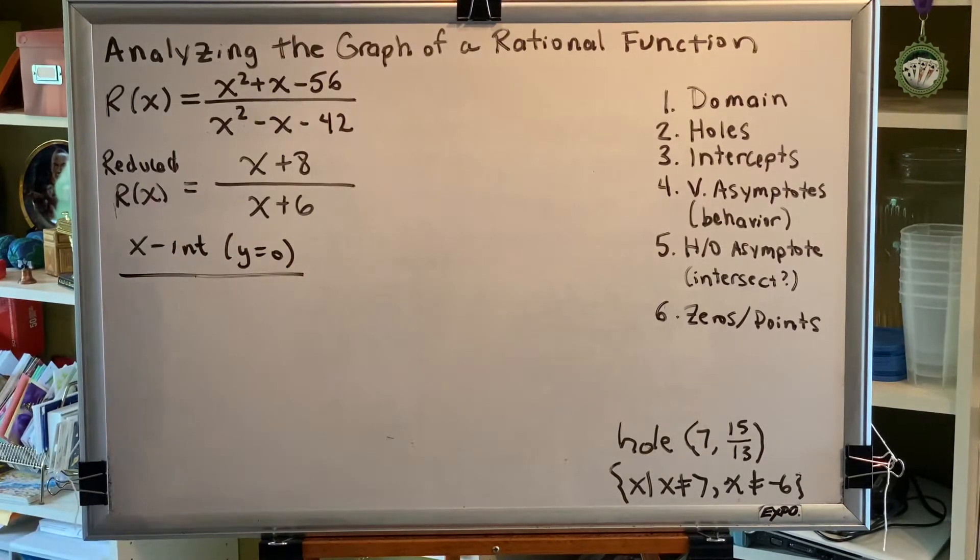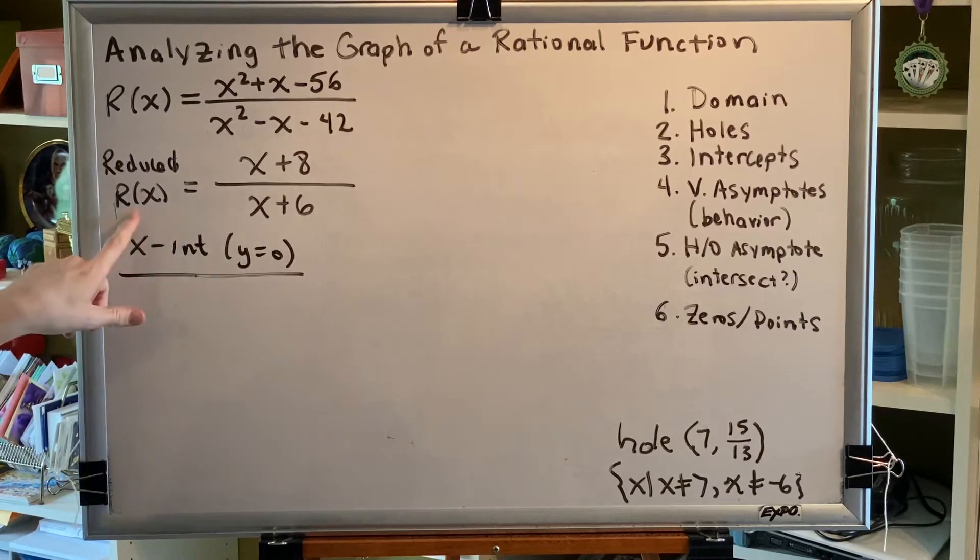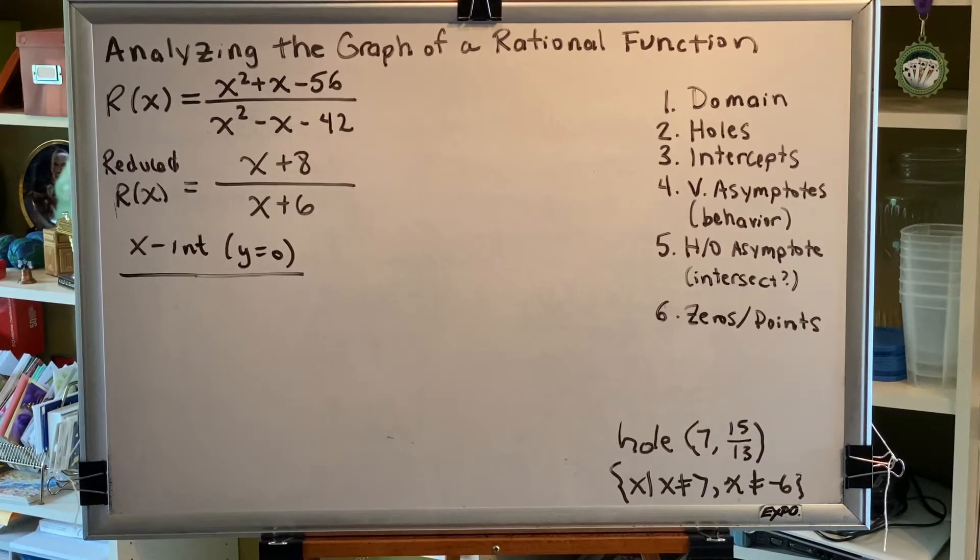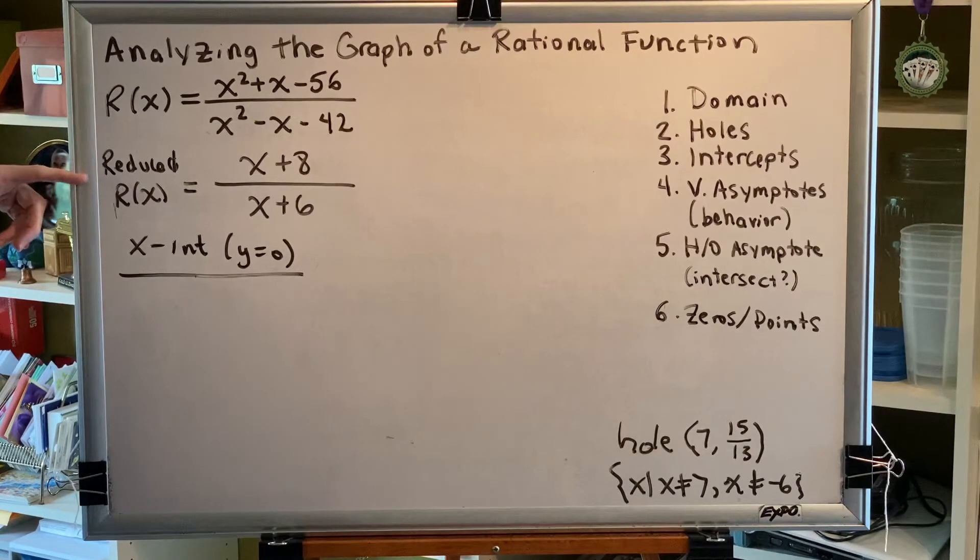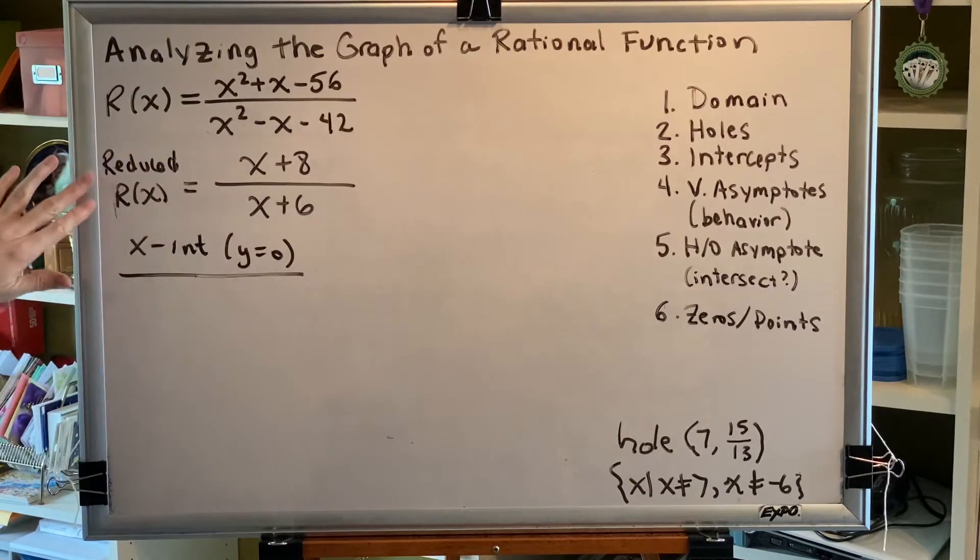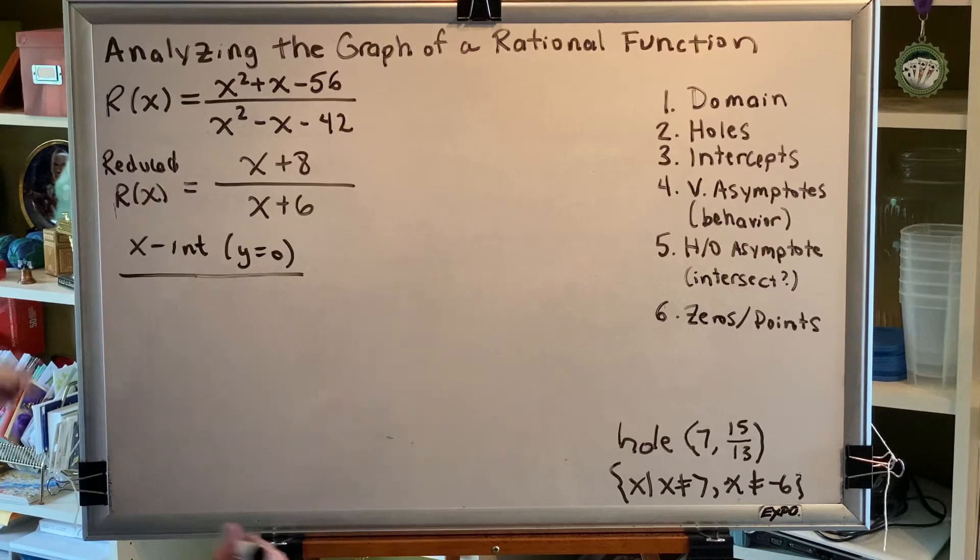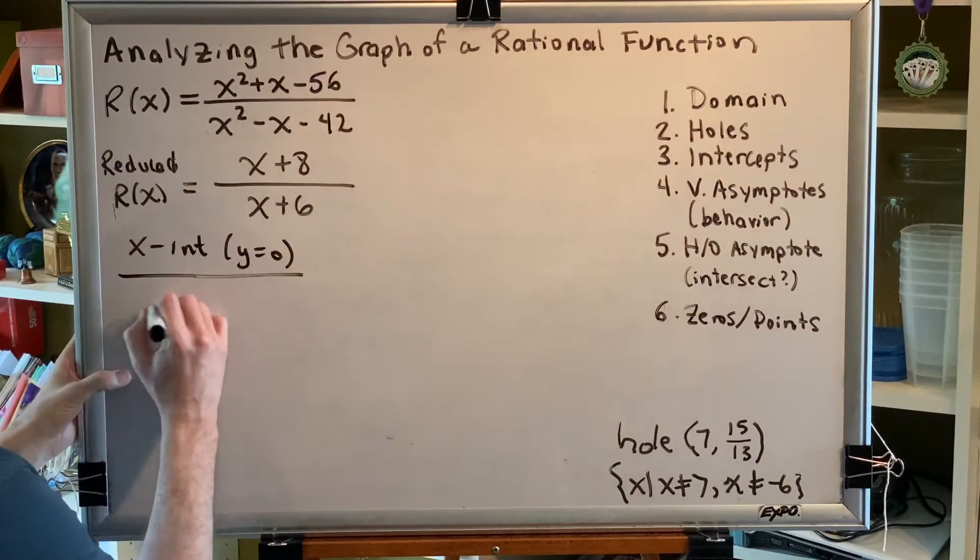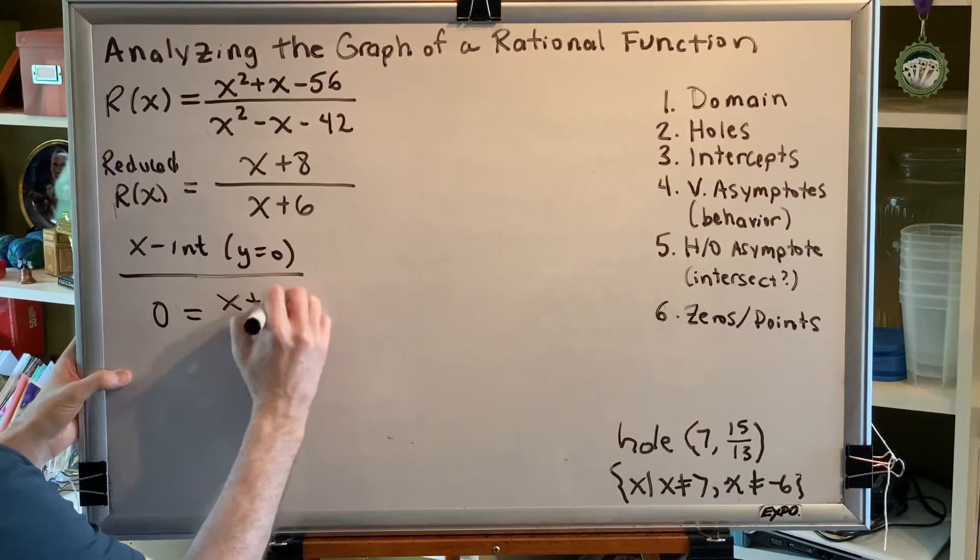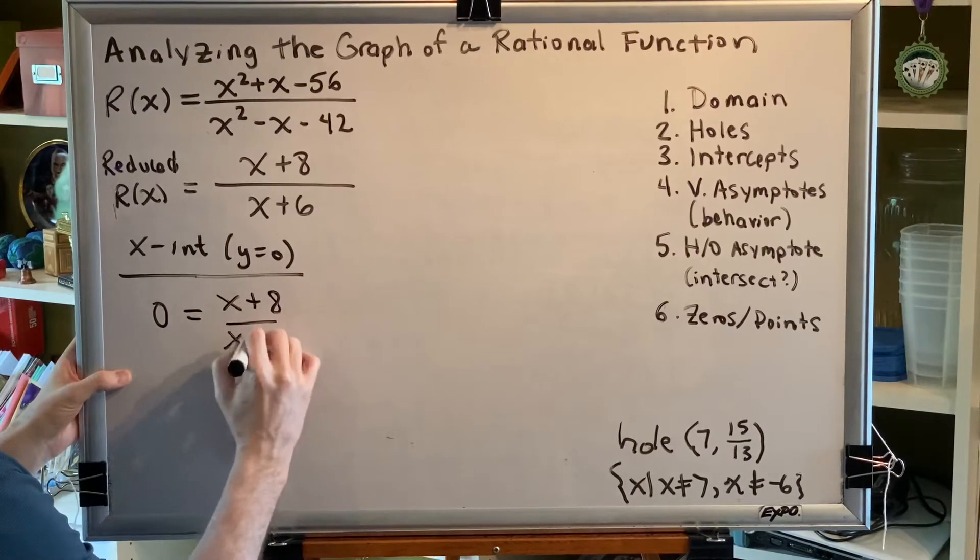First, x-intercepts, y equals 0. The part of our equation that tells us that y equals 0 is r of x. When we're looking for our intercepts, we can use the reduced r of x. So this is going to be the x plus 8 function. Replacing r of x with 0, we get 0 equals x plus 8 over x plus 6.